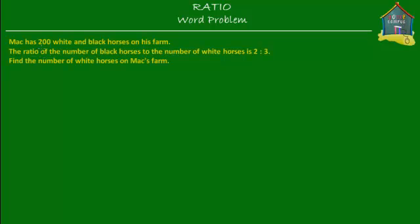Welcome to homecampus.com.sg. Let's solve this word problem. Mac has 200 white and black horses on his farm. The ratio of the number of black horses to the number of white horses is 2 to 3. Find the number of white horses on Mac's farm.